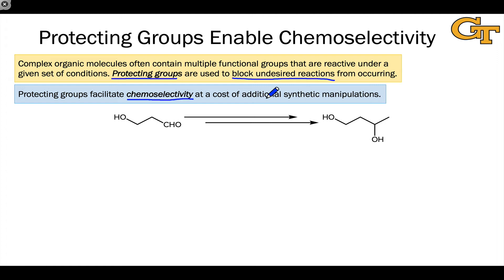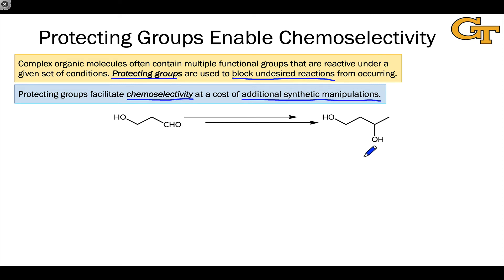There is a cost, however, and the cost is additional synthetic manipulations. We have to put the protecting group on and then take the protecting group off — at a bare minimum, two additional synthetic steps — with the corresponding energy use, time required, and solvent and other materials that end up wasted.